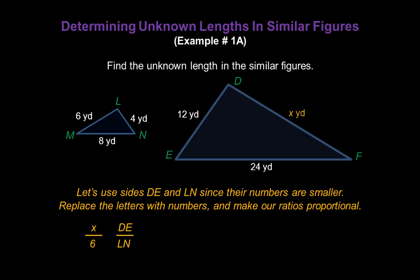And again, replace the letters with numbers, and then make our ratios proportional. The length of DE is 12 yards. The length of LN is 4 yards. And now we can make the ratios proportional by putting an equal sign between them.